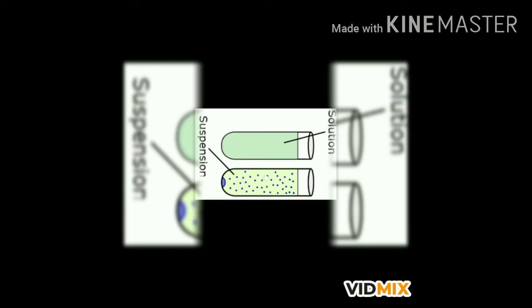Now we discuss suspension. A suspension is a heterogeneous mixture which contains small insoluble particles of solute spread throughout the solvent without dissolving. In suspensions the solute particles do not dissolve but remain suspended throughout the bulk of the medium. Examples include muddy water, chalk water, paint, and smoke in air. Sparingly soluble salts such as barium sulfate dispersed in water are also examples — used for diagnostic X-rays. The particle size in suspensions is greater than 10⁻⁷ meter or 10⁻⁵ centimeter.